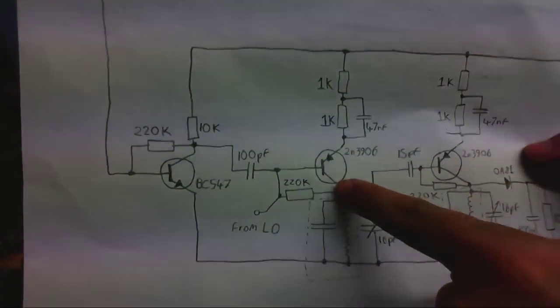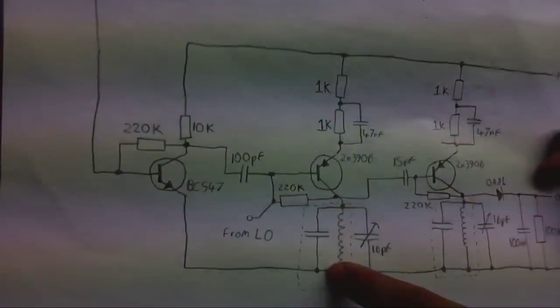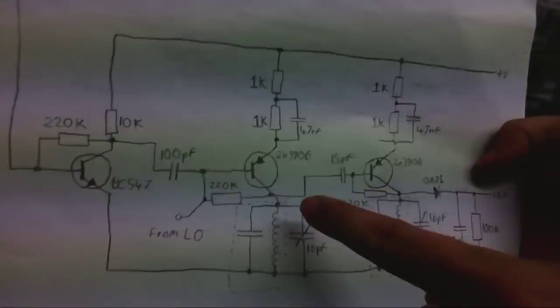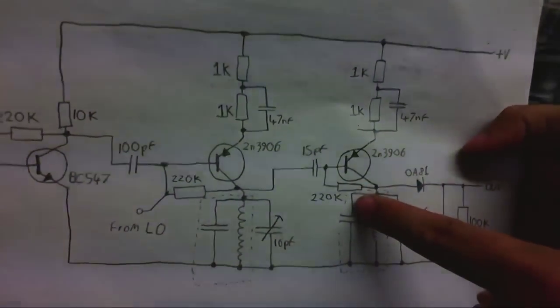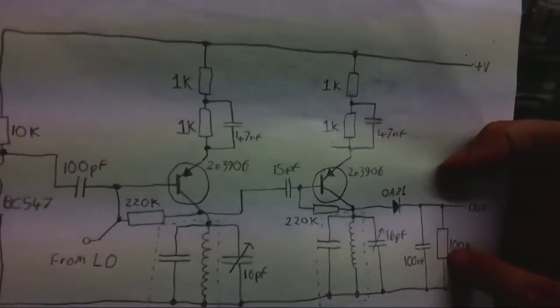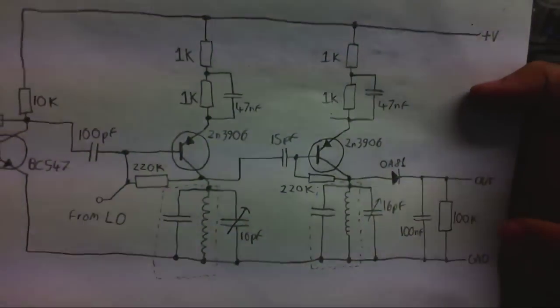And there's the mixer and the first IF stage here, and that's where the local oscillator is connected, and over here, excuse the flickeriness of the picture, there's the second IF stage and then the output, which goes to the amplifier.